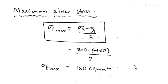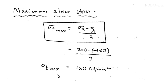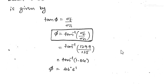Finally, we find the maximum intensity of shear stress at the point. The formula for maximum shear stress is: τmax = (σx − σy) / 2. Substituting σx = 200 and σy = −100: (200 − (−100)) / 2. When we simplify, we get the maximum shear stress as 150 N/mm². This is how we solve this type of problem.